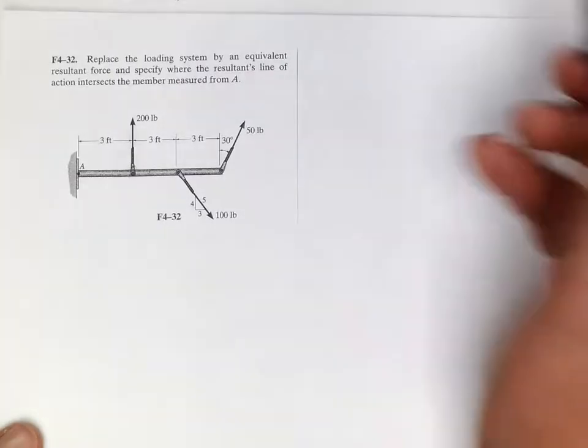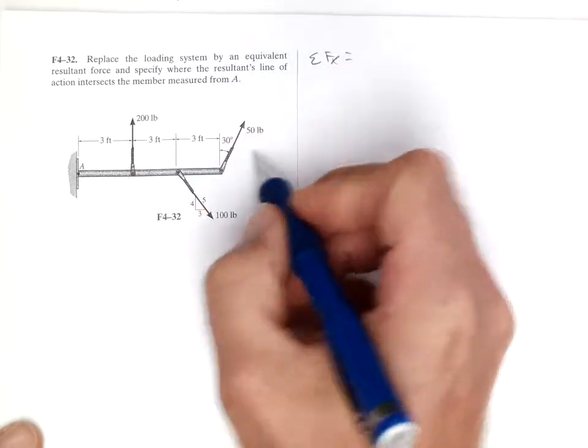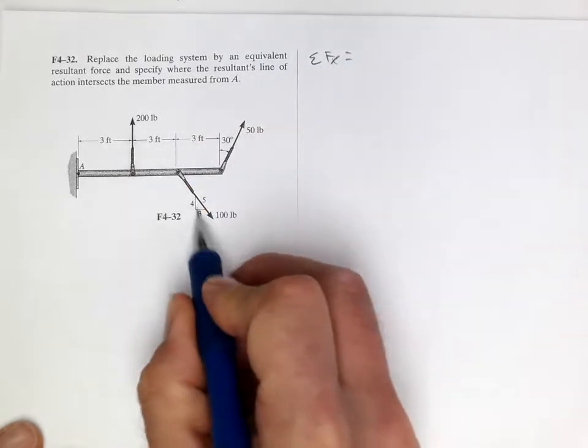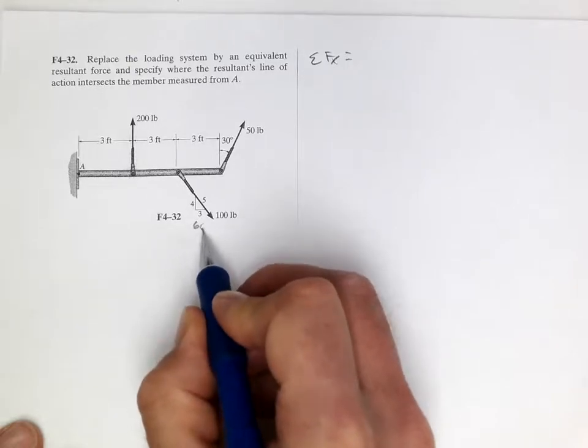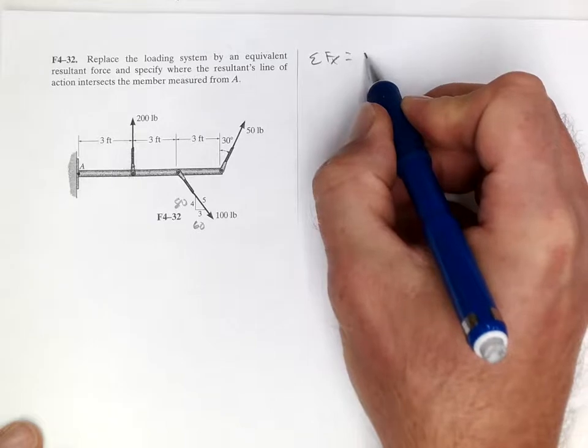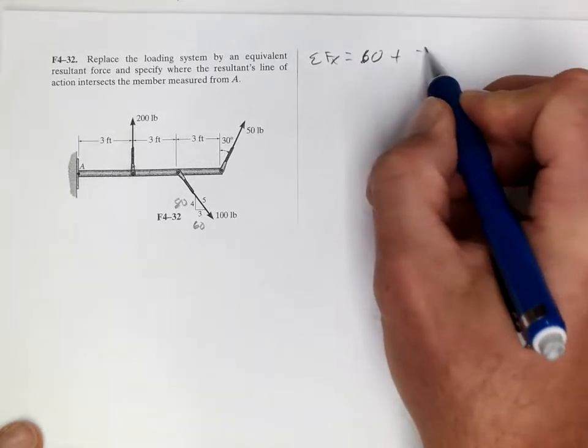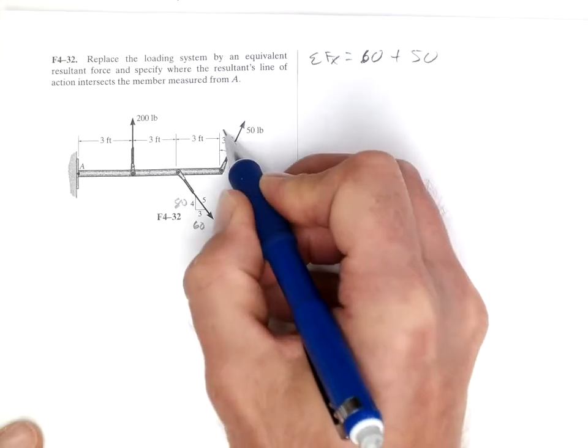So let's sum the forces in the x direction first. This is a 3, 4, 5 triangle, so this is 60 here and 80 here. So we got 60 plus 50 sine 30, and that equals 85.